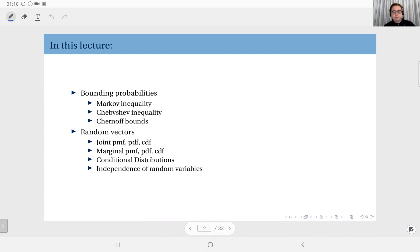Under this heading we will talk about three methods: Markov inequality, Chebyshev inequality, and Chernoff bounds. Then we will move to talking about random vectors or vector random variables, in which we will discuss joint distributions, marginal distributions, how we can obtain marginal from joint distributions, conditional distributions, and finally we will talk about independence when we talk about random variables.